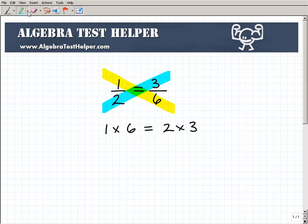Now we're not solving any equation here. All I'm doing is showing you this property, and then we'll apply it here in a second in an actual equation. So 1 times 6, of course, is 6, and 2 times 3 is 6.